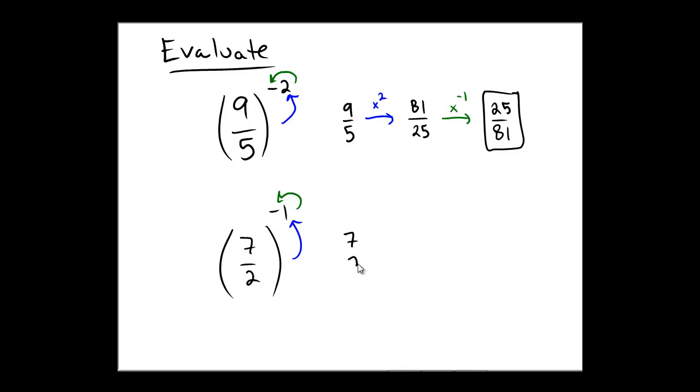So 7 halves. First stage: look at the magnitude of the number, which is 1. In the first stage, we'll go x to the first power. Raising to the first power keeps it the same, so that's 7 halves.